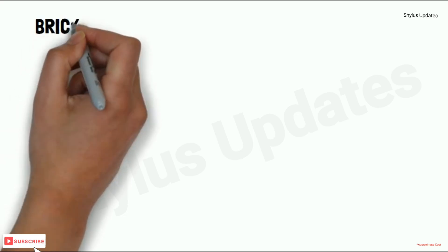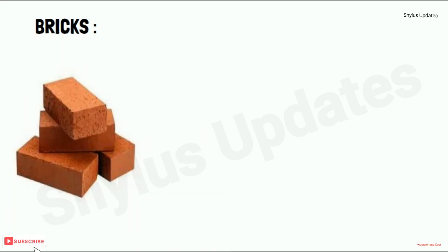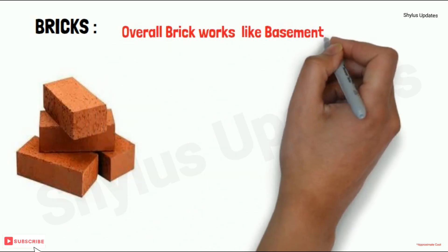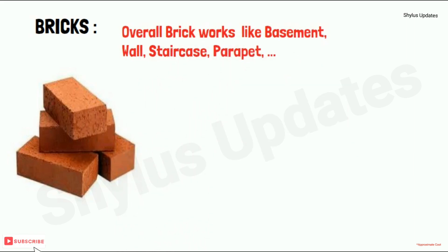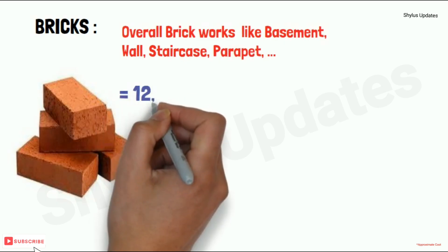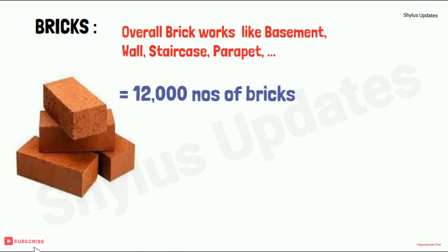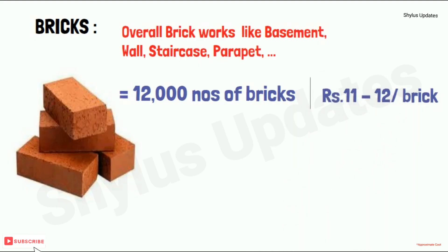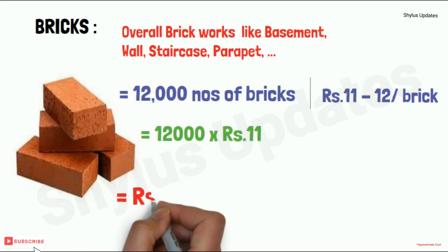Bricks are used in overall brick works like basement, wall, staircase, parapet, etc. For a 750 square feet house, 12,000 numbers of bricks are required. The current market rate of a brick is rupees 11 to 12. When you multiply 12,000 bricks into rupees 11, you get rupees 1,32,000.